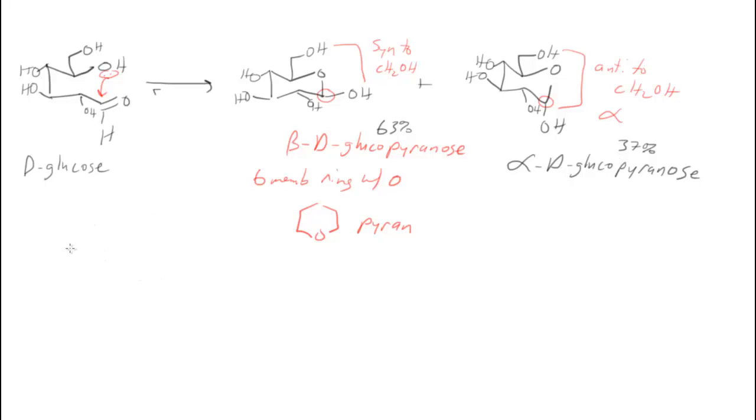Cellulose is made of beta-D-glucopyranose. It's really a polymer chain of a bunch of beta-D-glucopyranose rings together. While things like starch and glycogen are formed from alpha-D-glucopyranose.